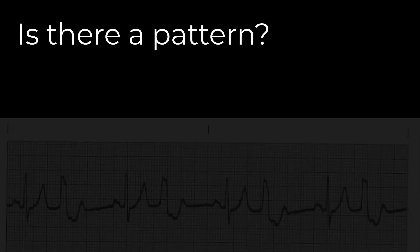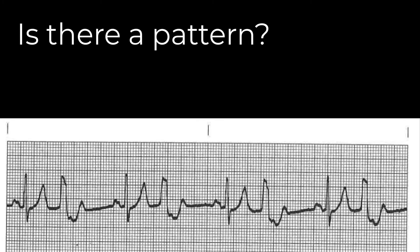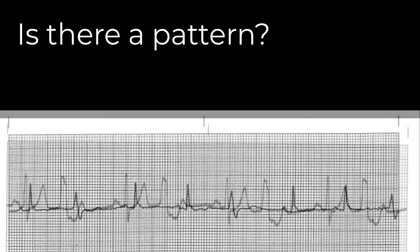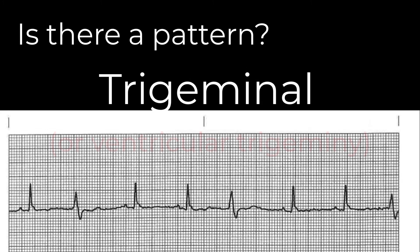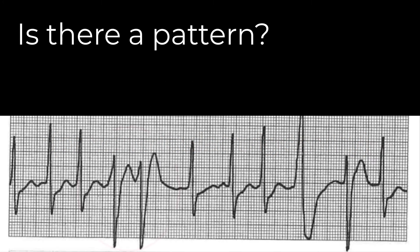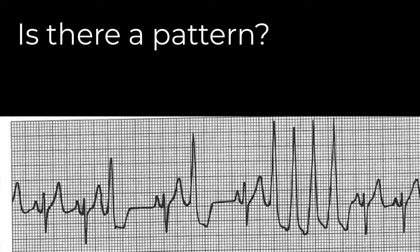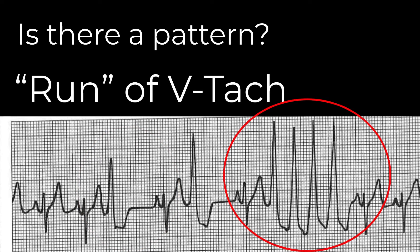Just like we labeled our other early beats, if every other beat is a PVC, we call that ventricular bigeminy. If every third beat is a PVC, we call that ventricular trigeminy. If we see two PVCs in succession without a normal beat in between, we call that a couplet of PVCs, and if we see three or more in a row, we must identify that as its own ventricular rhythm.